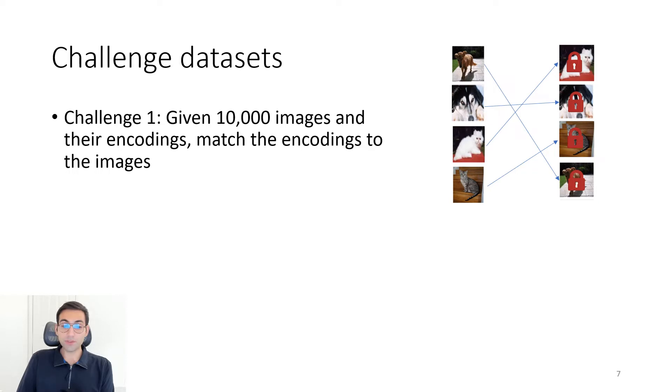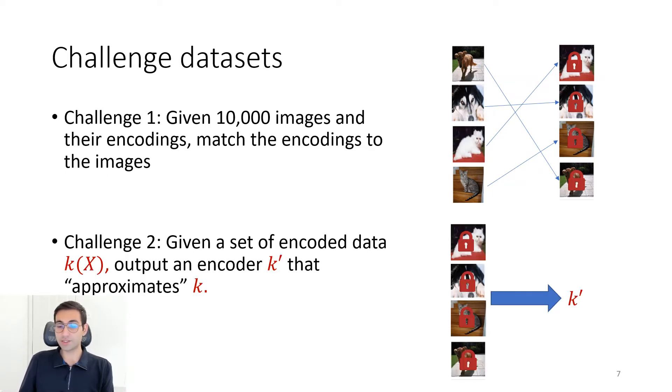To support their claims about the privacy of NeuroCrypt, they released two challenge datasets. The first challenge is a set of 10,000 images with their encodings that are shuffled, and they ask the adversary to find the matching between the images and their encodings. The second challenge gives the adversary only the set of encodings and asks them to come up with an approximation of the key that was used to do these encodings.